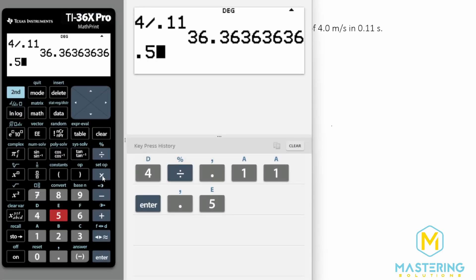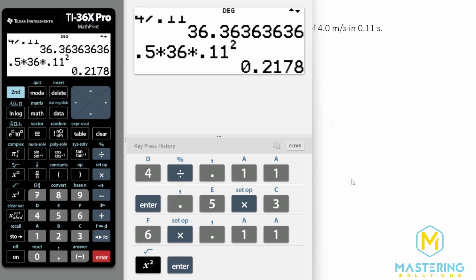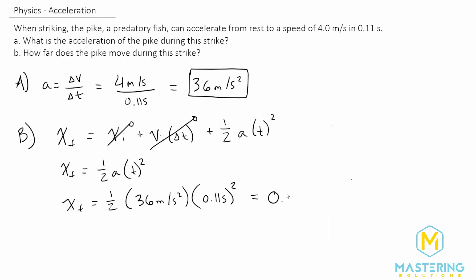0.5 times 36 times 0.11 squared gives us a distance of 0.2178. So we'll round that to 0.22 meters.